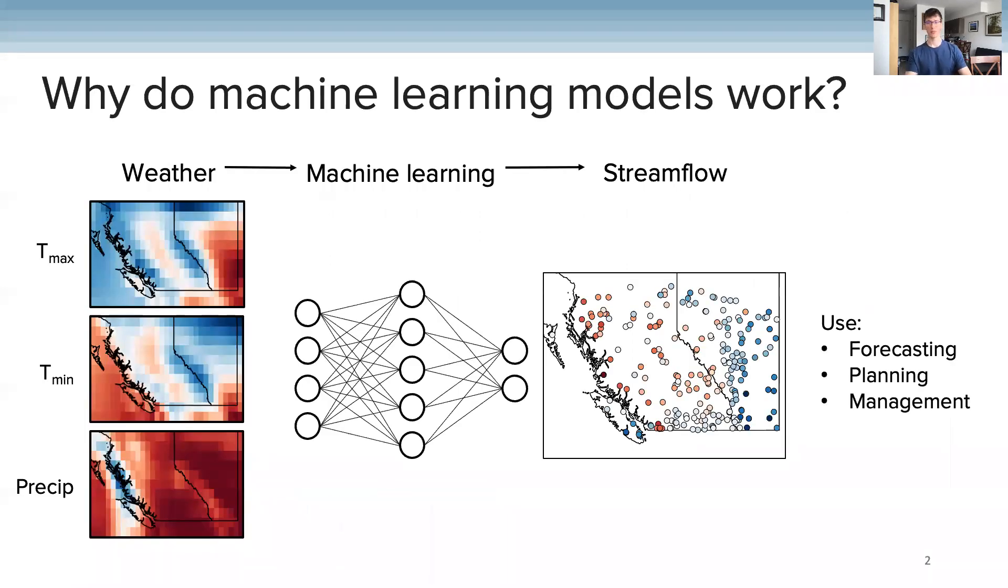I'll be talking about hydrological models which predict streamflow from weather. Broadly speaking, mapping weather through to streamflow has implications for forecasting and strongly influences how we plan and manage our water. These are important issues, and if we're using machine learning, it's really important to also know why the models are working so that we can trust them.